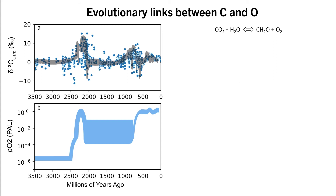When we look at the oxygen curve through time, we can see that atmospheric oxygen rises in two major steps: first, in the Paleoproterozoic during what is called the Great Oxidation Event, and a second time during the Neoproterozoic during what is called the Neoproterozoic Oxygenation Event. This figure shows that these major oxygenation events coincide with positive carbon isotope excursions in marine carbonates.